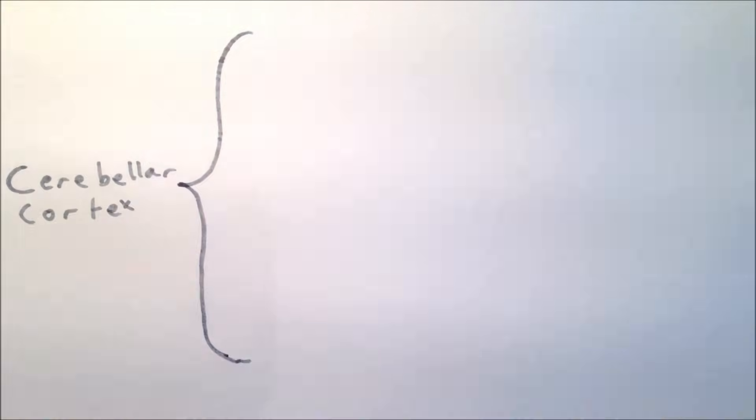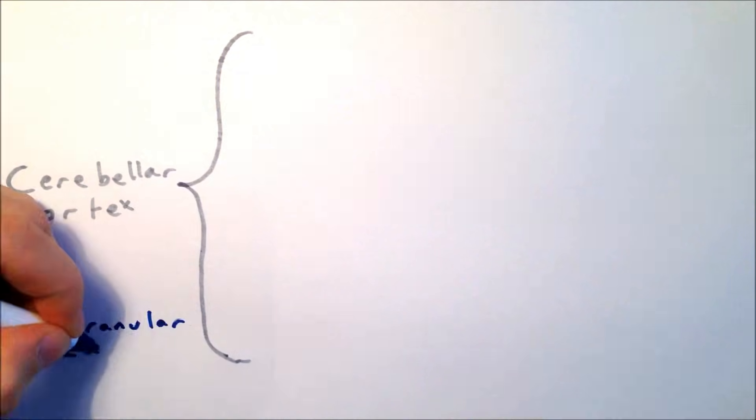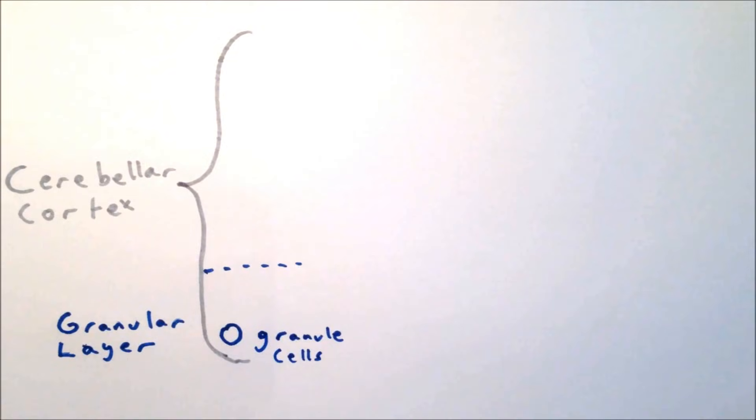All throughout the cerebellar cortex, the neurons are wired into the same basic circuit, repeated over and over again in parallel. In the deepest layer of the cortex, the granular layer, lie granule cells. These are excitatory neurons which send their axons up into the outermost layer of the cortex, the molecular layer.